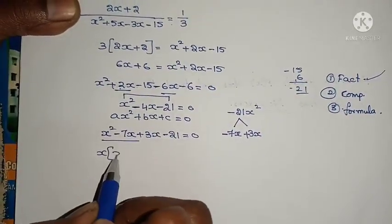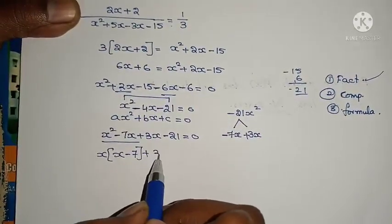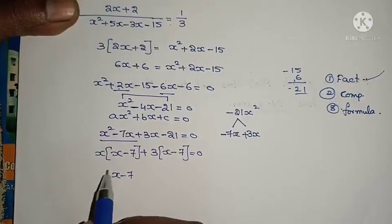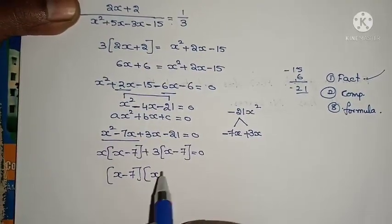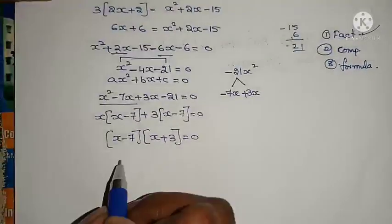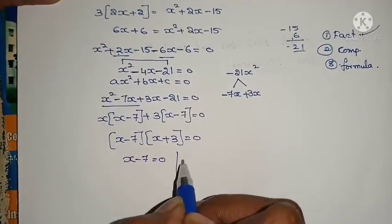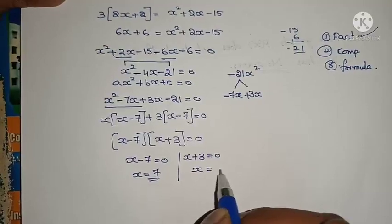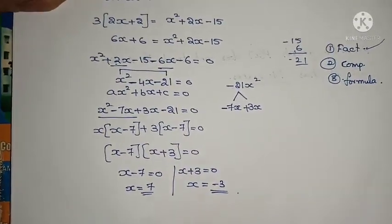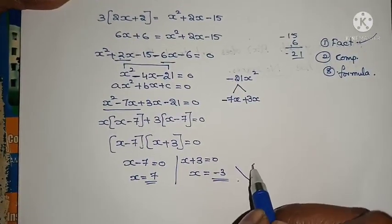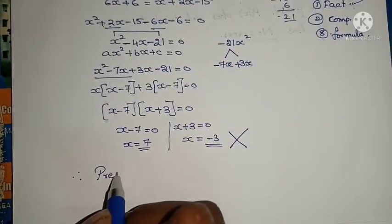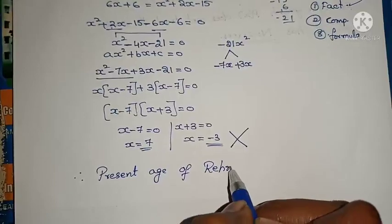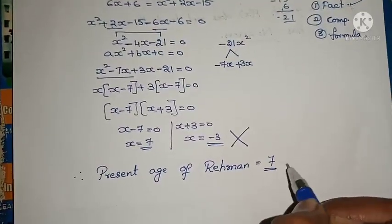Substitute: X squared minus 7X plus 3X minus 21 equals 0. Take X as common from first two: X(X minus 7). Take 3 as common from last two: 3(X minus 7). So (X minus 7)(X plus 3) equals 0. Therefore X equals 7 or X equals minus 3. Age cannot be negative, therefore Rahman's present age equals 7 years.